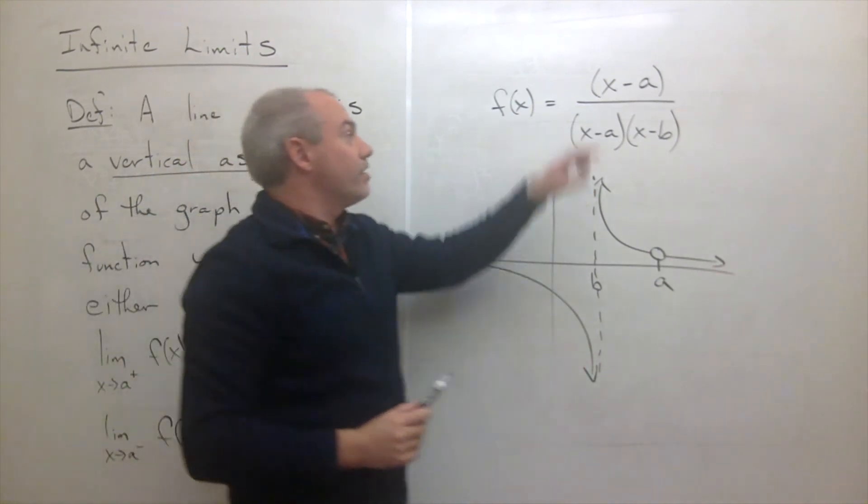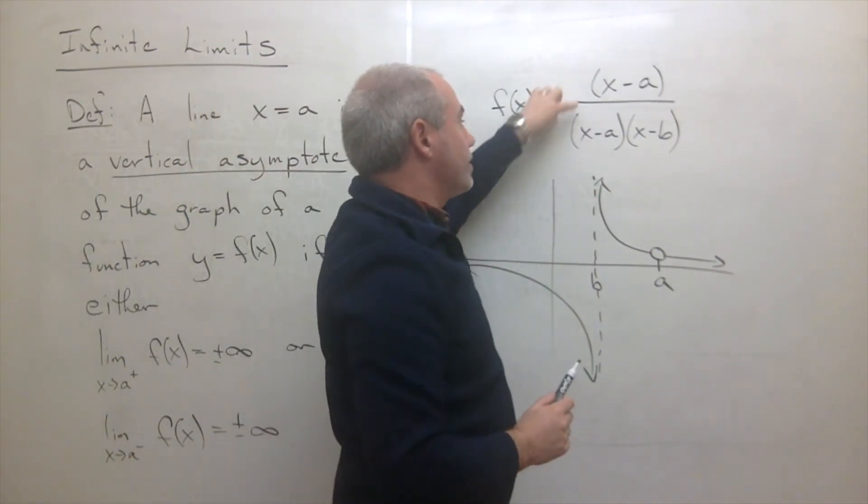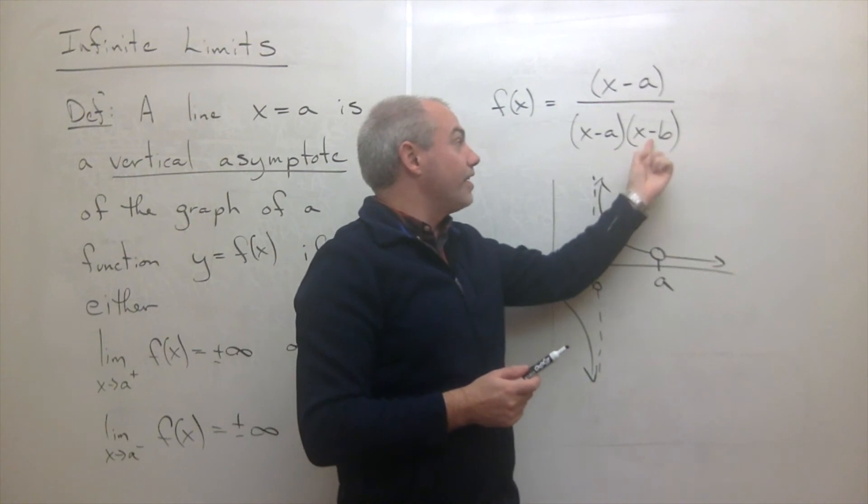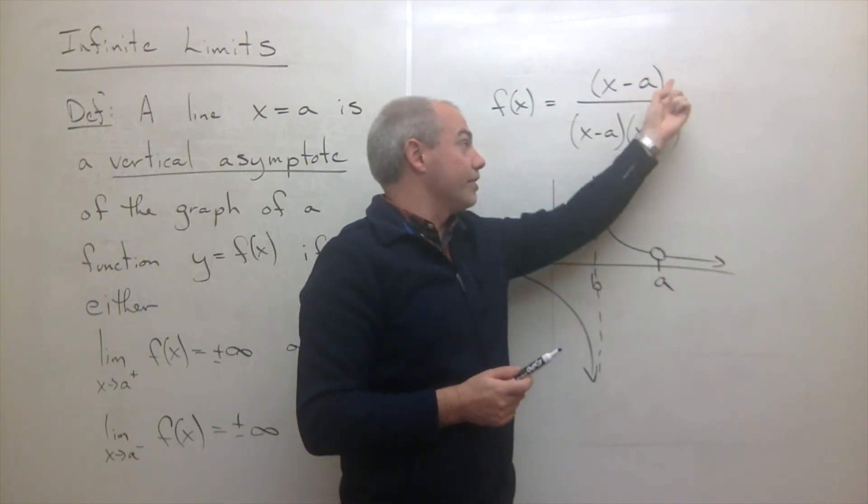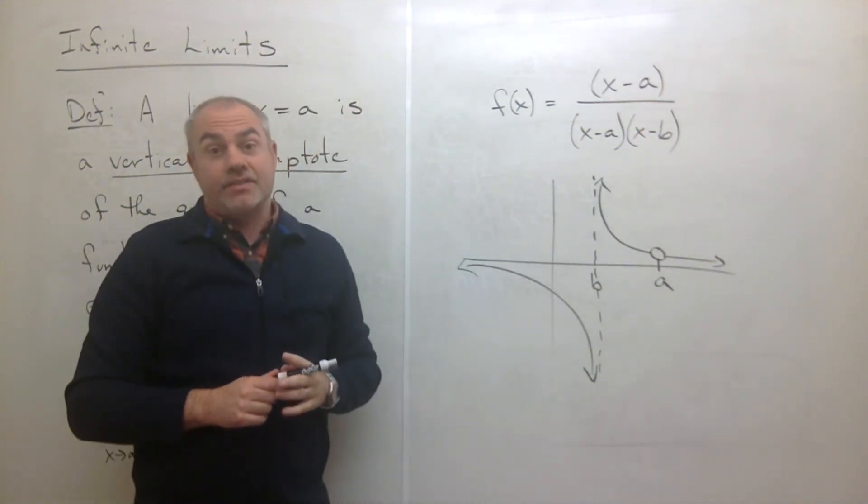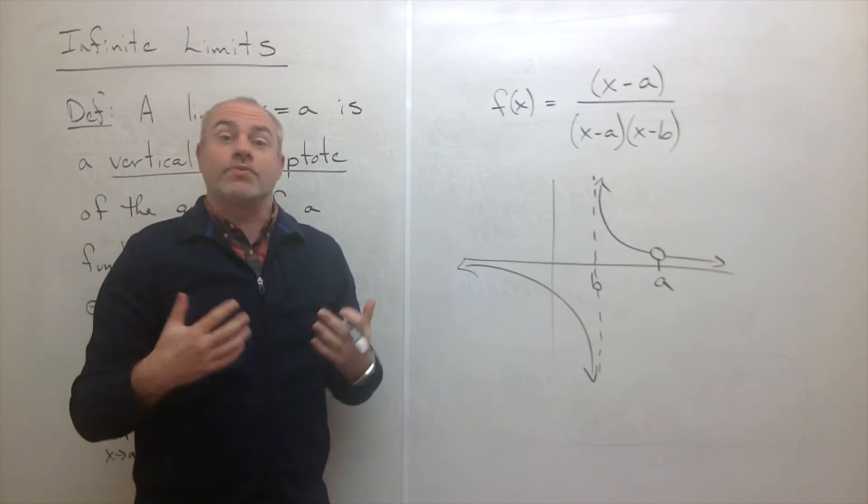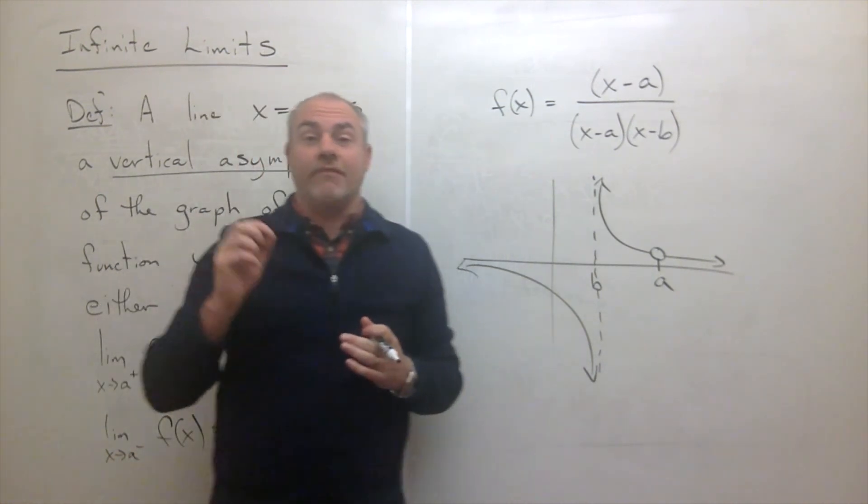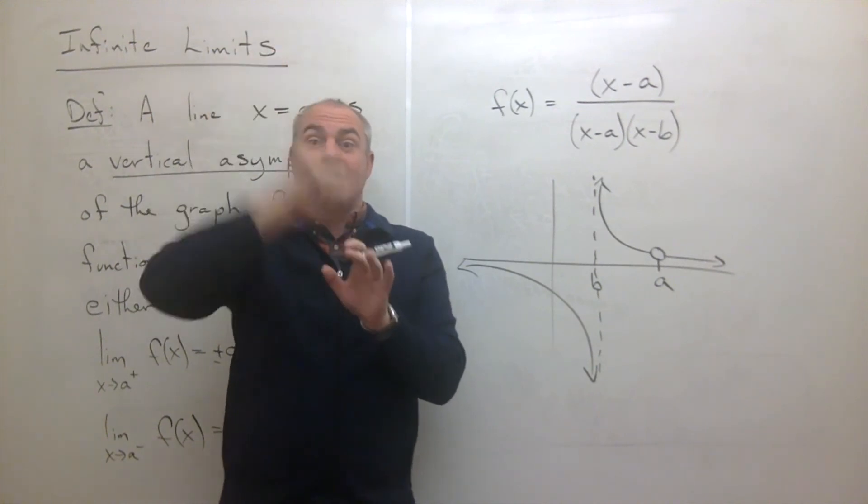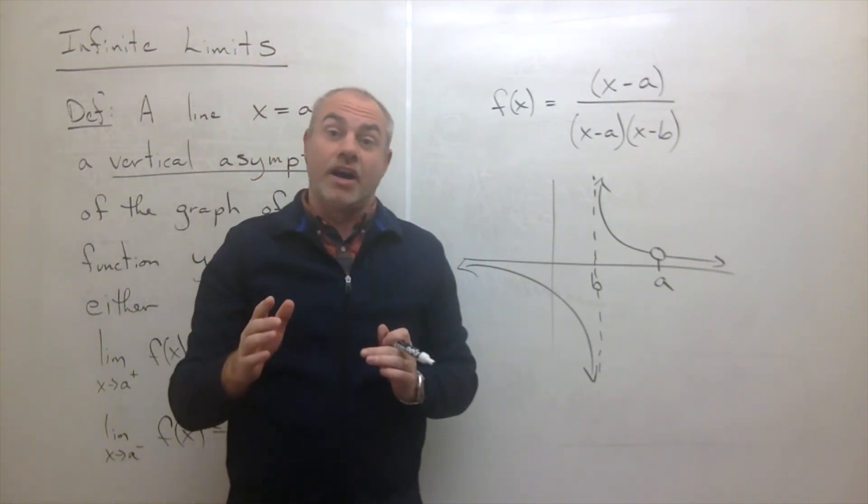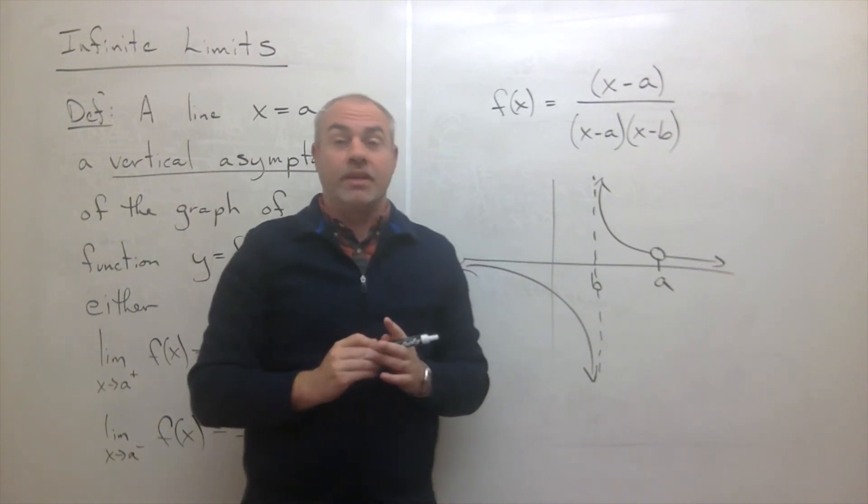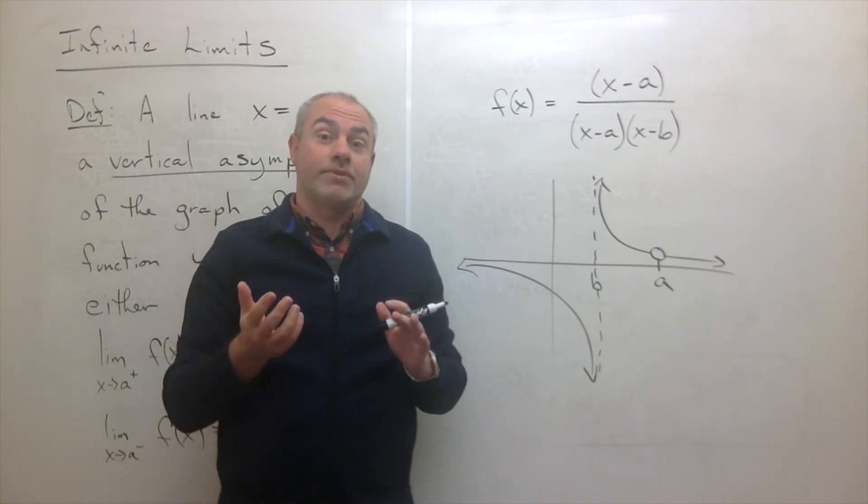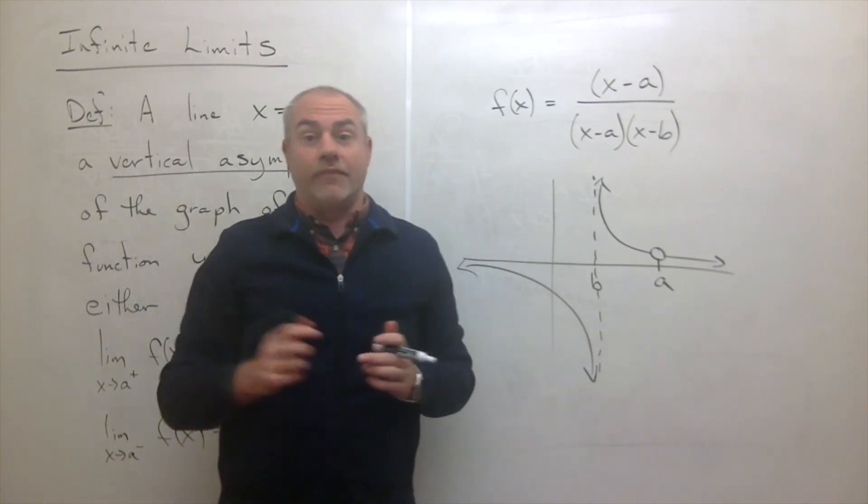So if there's a factor on top and on bottom that's causing the division by zero, it's just a hole in the graph. If there's a factor on the bottom that does not have a factor on the top to cancel it out, that is a vertical asymptote. So as we go through examples on that, keep that in mind is that if the factor has a partner on top that cancels, that's a hole in the graph. If it does not, it's a vertical asymptote. And that's going to come in useful throughout this course to keep that in mind, recognizing the difference between a hole in the graph and a vertical asymptote.